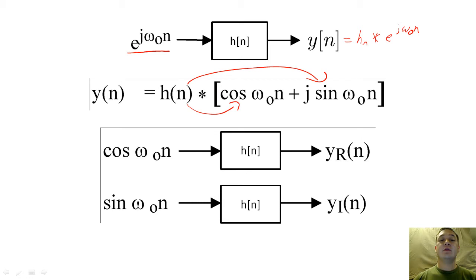We see that the real part of the input is cosine omega naught n, and the imaginary part of the input is sine omega naught n. We can find our final y of n by simply adding these real and imaginary parts together.